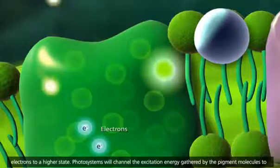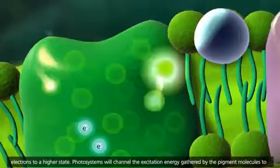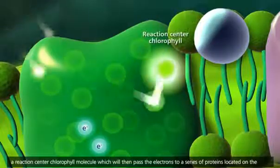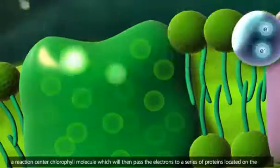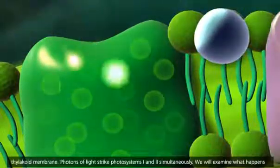Photosystems will channel the excitation energy gathered by the pigment molecules to a reaction-center chlorophyll molecule, which will then pass the electrons to a series of proteins located on the thylakoid membrane.